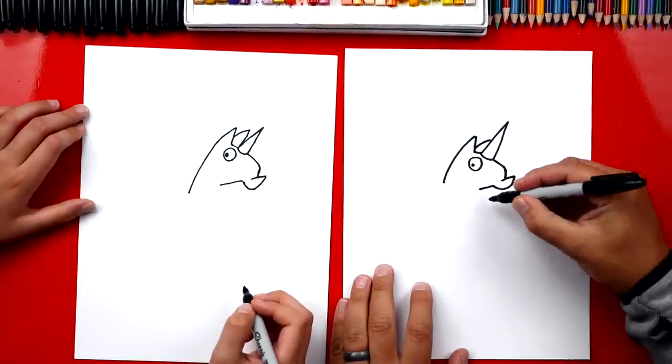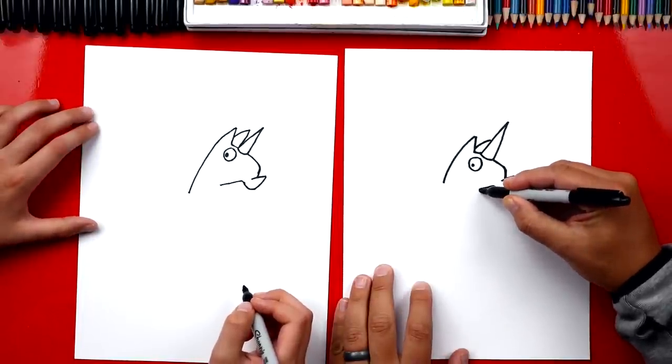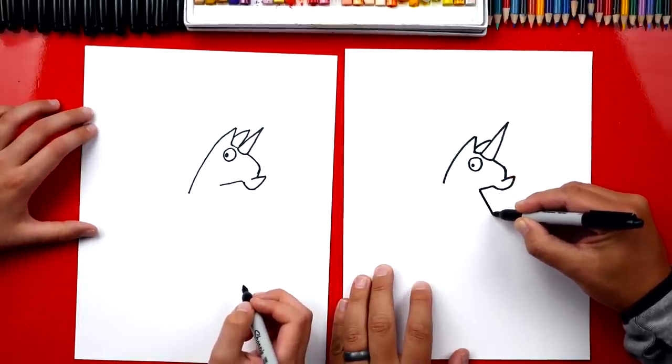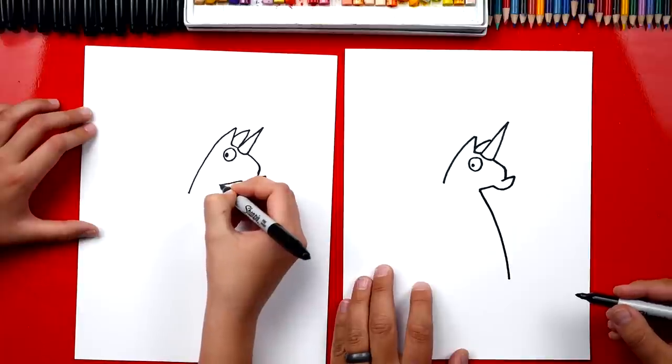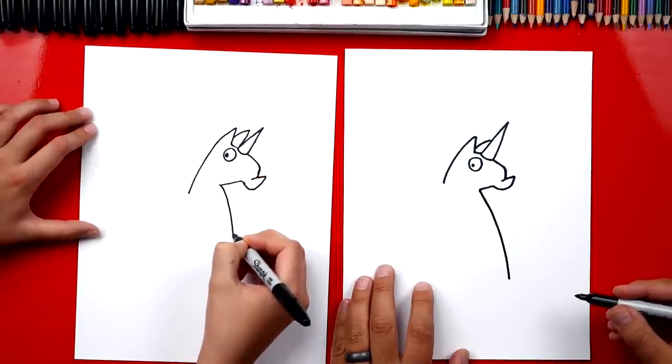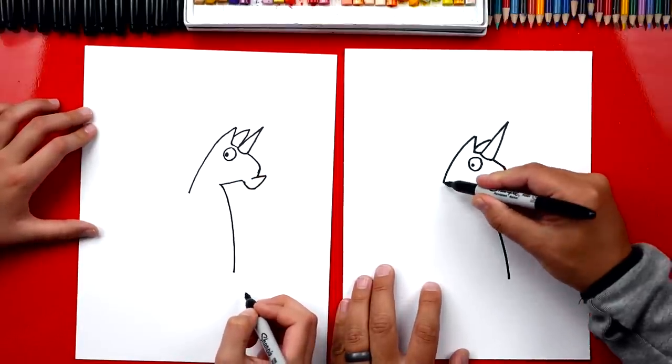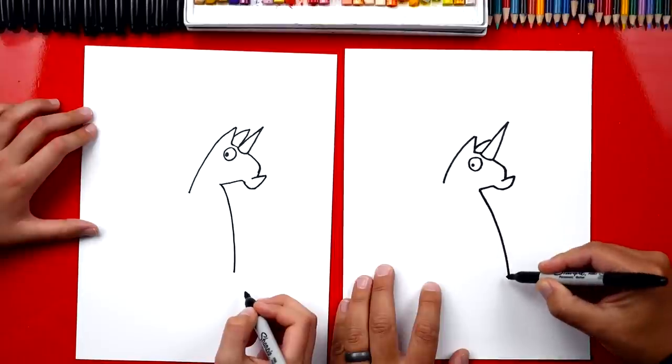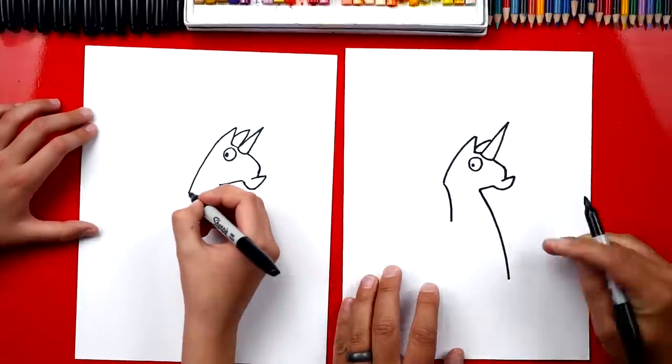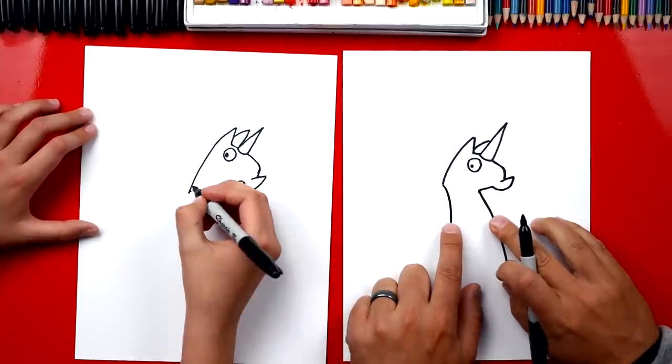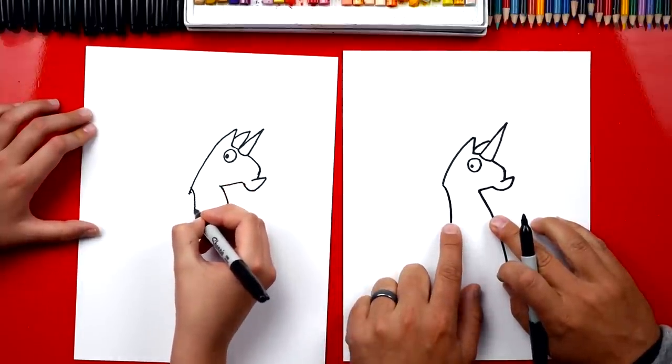Now we're gonna draw his neck and also his chest. We're gonna draw a curve that comes down and it comes really far down like this. This is a funny creature. Then we're gonna draw the back of his neck and it's shorter, but it matches the same curve. So we're gonna come down like this and then curve and it gets a little wider at the base of his neck.